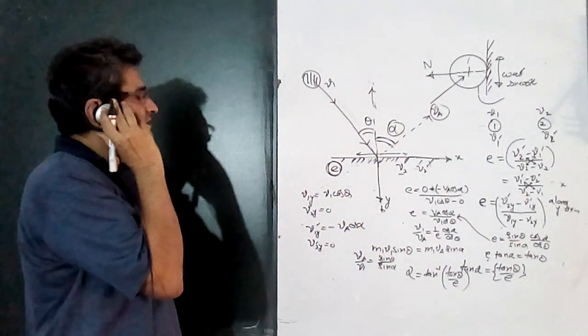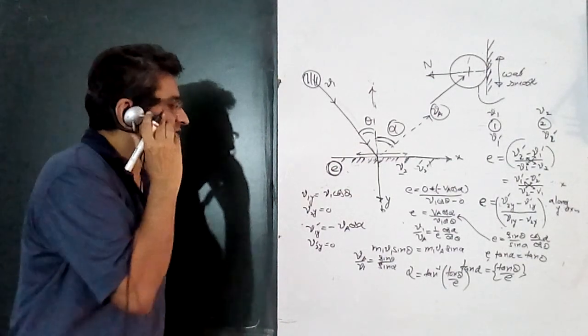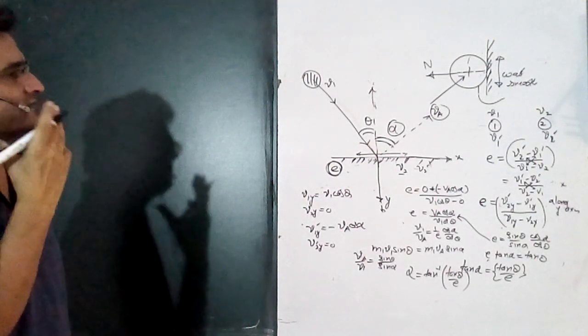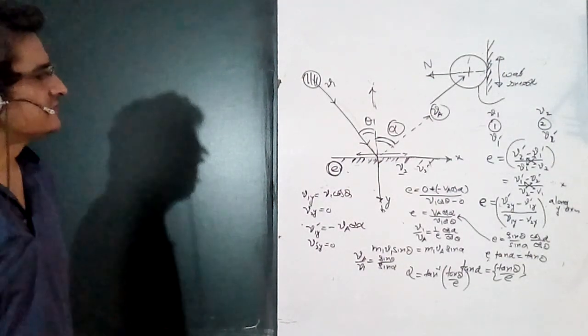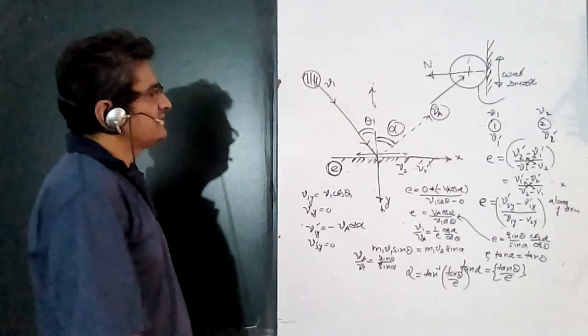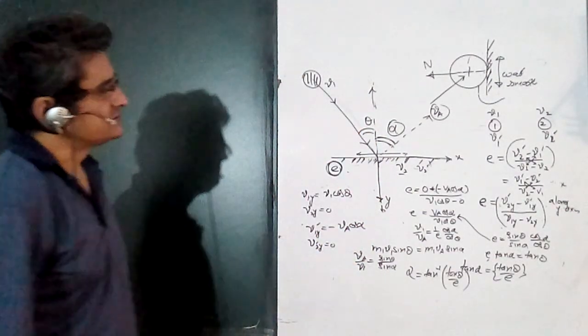Notice: if e = 1, then tanα = tanθ, so α = θ — the ball rebounds at the same angle. But when the coefficient of restitution is less than 1, meaning there is energy loss, this angle will change.